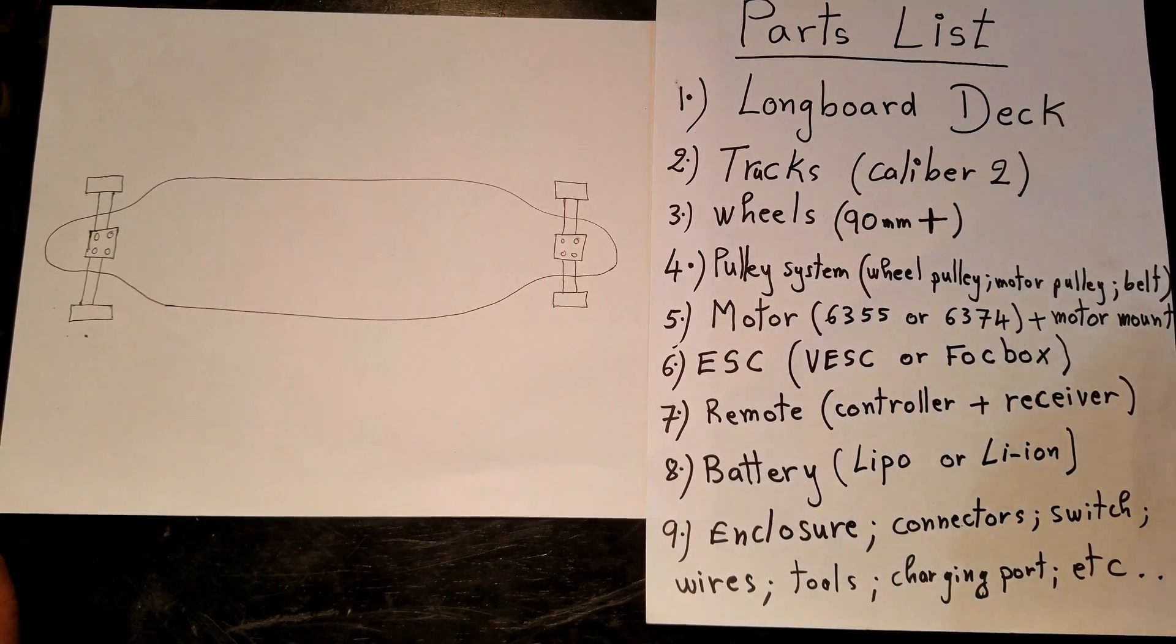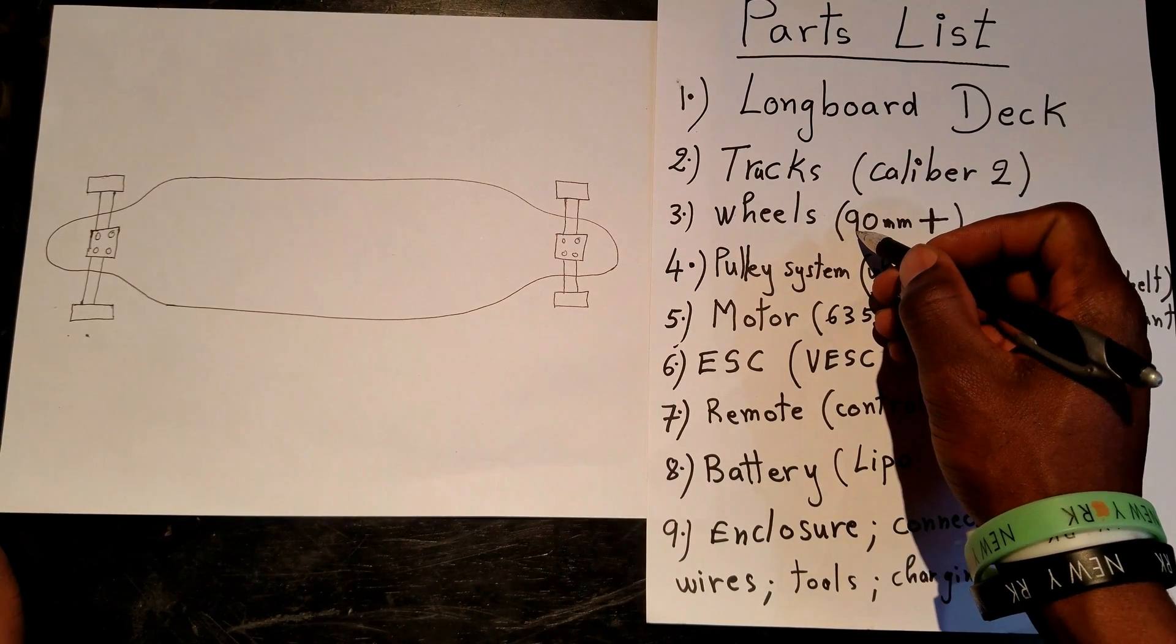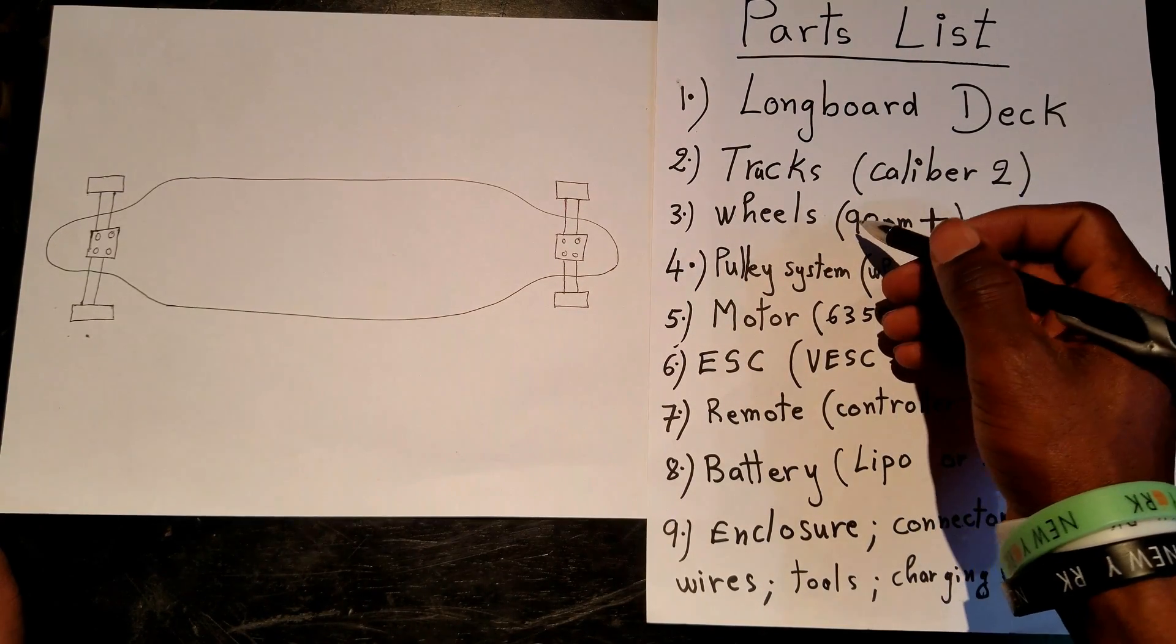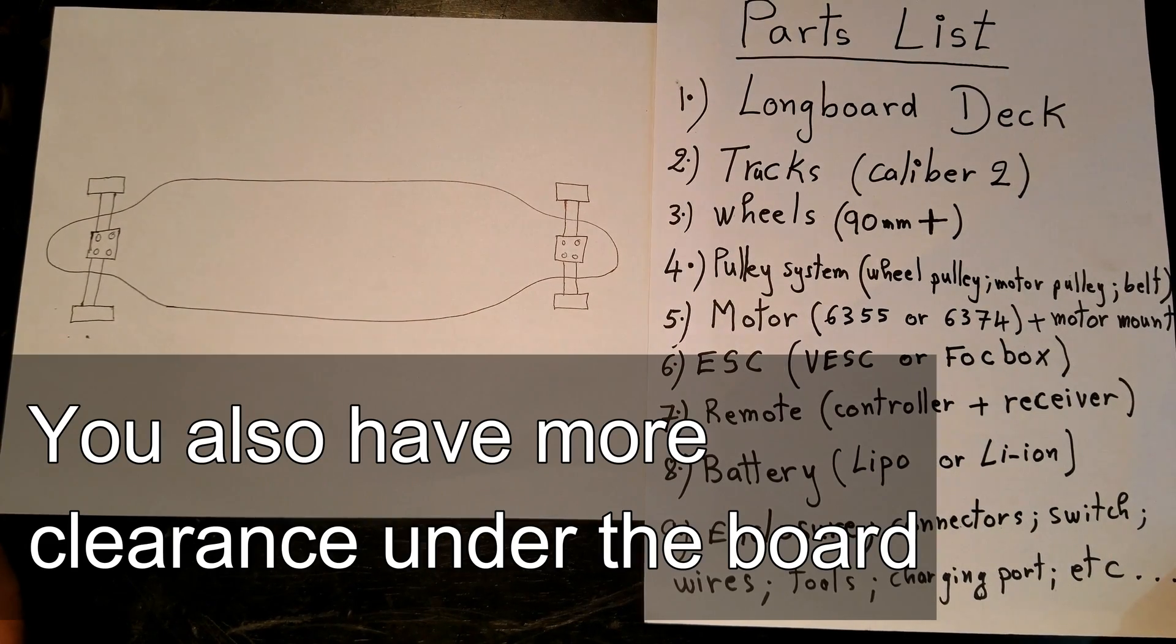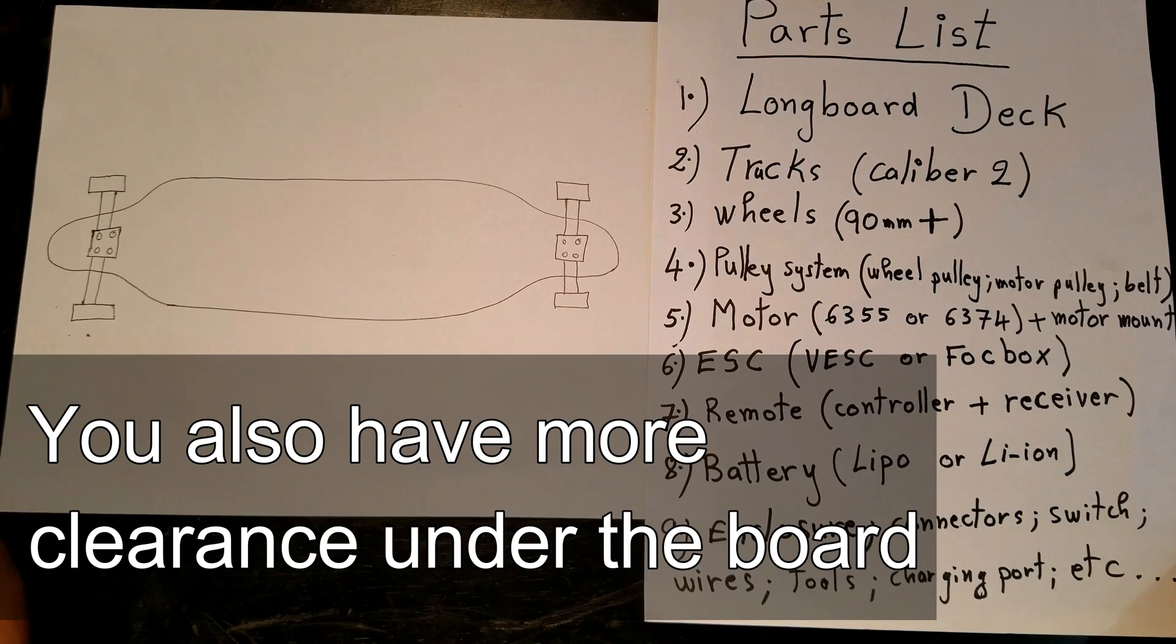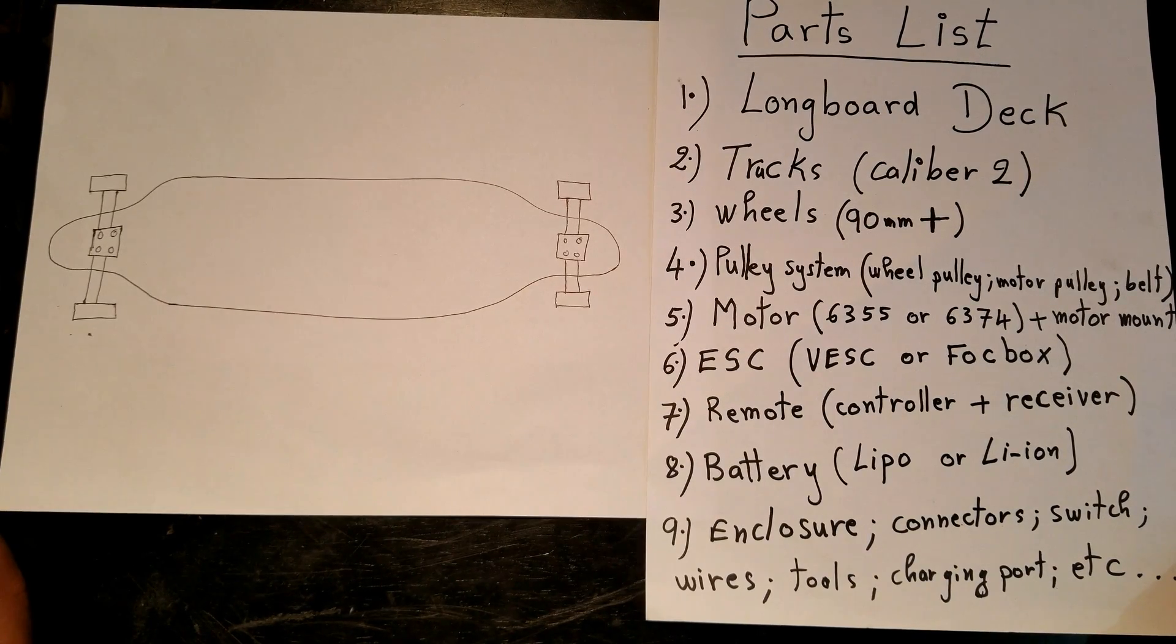Next on the list is the wheels. Here you have to use 90 millimeter wheels or bigger. That's what I recommend because not only do you have a smoother ride when the wheels are bigger, but you also have a higher top speed.